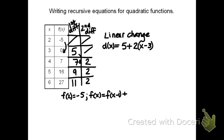I'm now going to simplify this equation. To do that, I'll distribute the 2. And I get that 5 plus 2x minus 6. Simplifying it a bit more, I get that d of x equals 2x minus 1. The minus 1 is from the 5 minus 6.